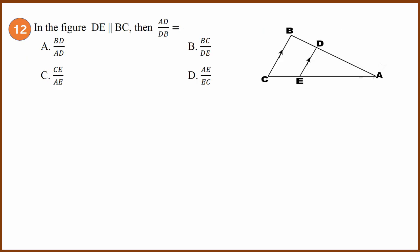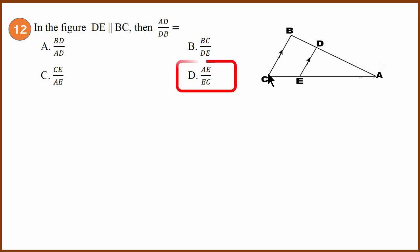Twelfth question: this is a basic proportionality theorem question. If DE is parallel to BC, then AD divided by DB will be equal to AE divided by EC. The answer is D.